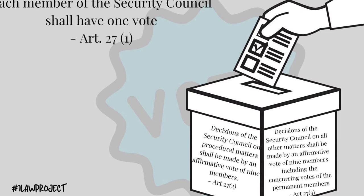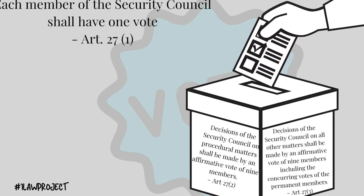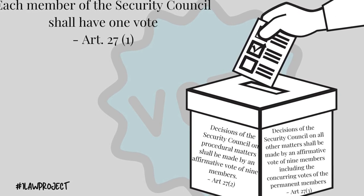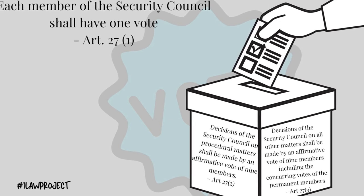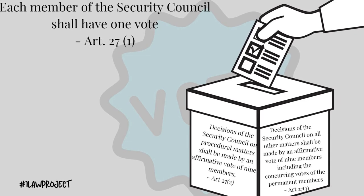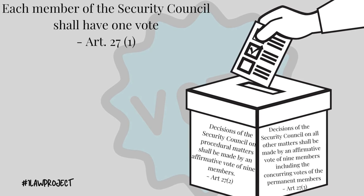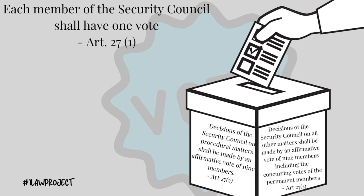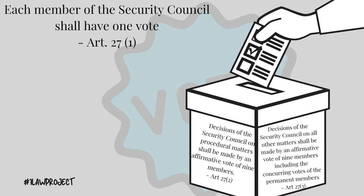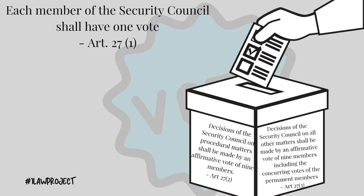When a vote is to be made on a substantive issue, there must also be nine affirmative votes. But the makeup of those voters is essential to highlight — with substantive issues, of the nine affirmative votes needed, all five permanent members must give a concurring vote. So of the nine votes needed, five must come from the five permanent members, creating a higher threshold for substantive issues.